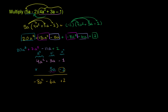Then we take 5a and multiply it by each term. 5a times negative 1 is negative 5a, placed under the a column. 5a times 3a: 5 times 3 is 15, and a times a is a squared, so 15a squared goes under the other a squared term. Finally, 5a times 4a squared: 5 times 4 is 20, and a times a squared is a to the third, giving us 20a to the third.